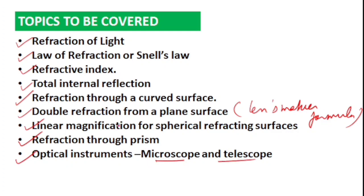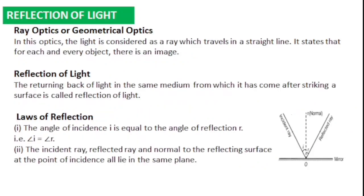Ray Optics — optics is nothing but light, and ray optics means light is considered as a ray. After this chapter, the next chapter is Wave Optics, in which light is considered as a wave. In Ray Optics, light is considered as a ray.